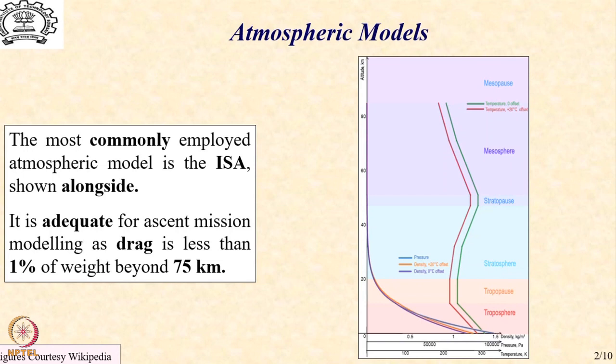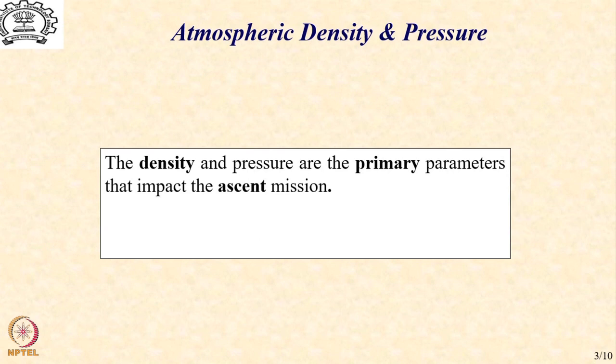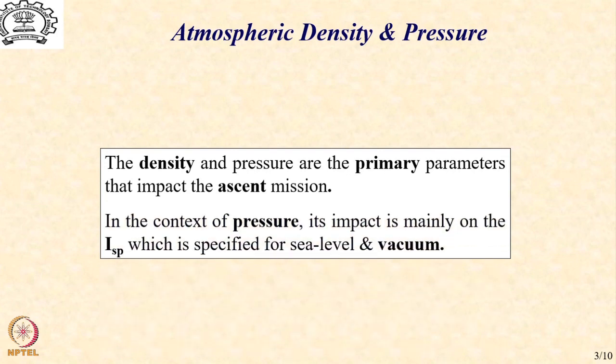In the context of drag, it is found that beyond 75 kilometers, drag is generally less than 1% of the weight and can obviously be ignored, the motion being practically in vacuum as far as the ascent mission is concerned. Density and pressure are the primary parameters which are going to impact the mission, and pressure will directly impact the ISP. So let us focus more on the drag model. Beyond 75 kilometers, we are not going to consider drag at all as a force for ascent mission calculations.